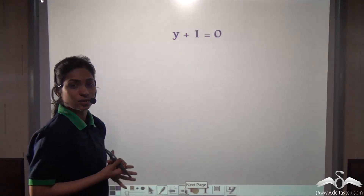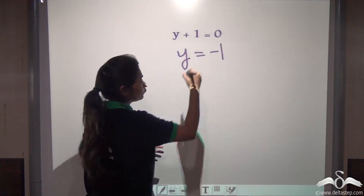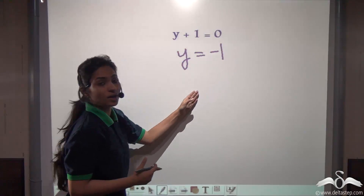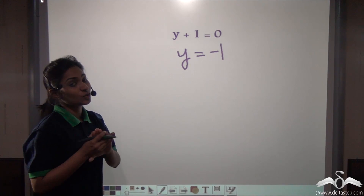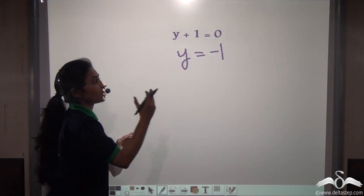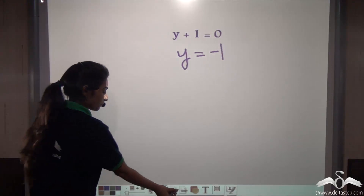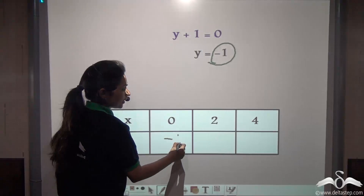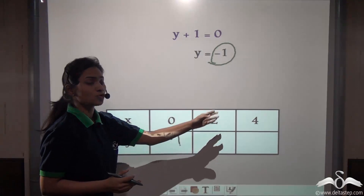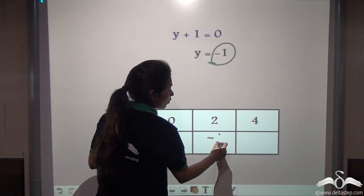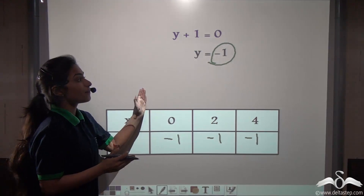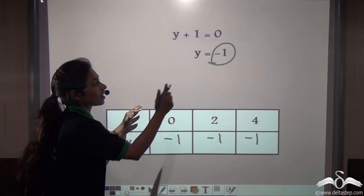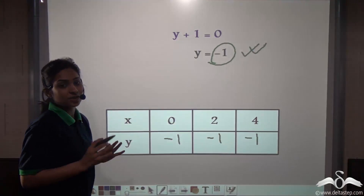The third equation was y + 1 = 0, which means y = −1 for this equation. Now x is missing here. That means the line y = −1 will be parallel to the x-axis, because whatever values you take for x, y will remain minus 1. Take x as 0, 2, 4, or any value — y will remain minus 1 only, because this line is parallel to the x-axis. Any point on that line will have different values for x but the same value for y, that is minus 1.